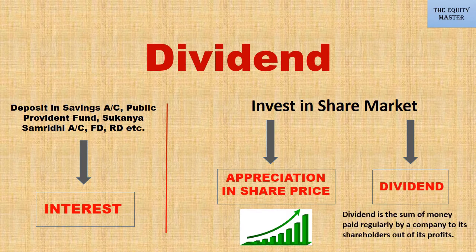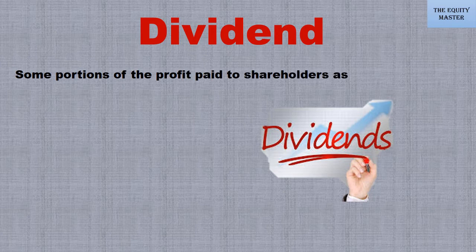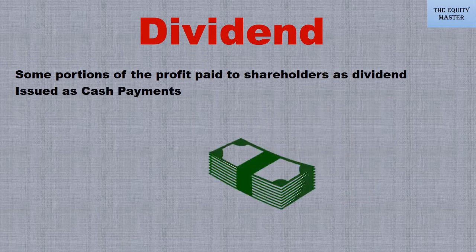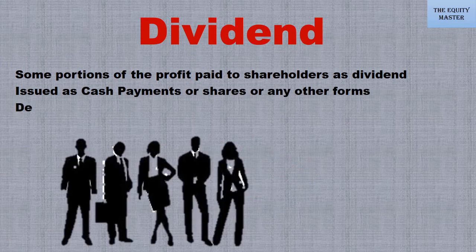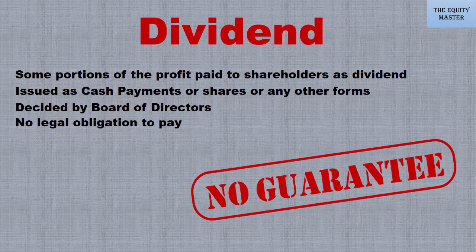Dividend is the sum of money paid regularly by a company to its shareholders out of its profits — so it is some portion of the profit paid to shareholders. Dividend is issued as cash payments, shares, or any other forms. Dividend paid out is decided by the board of directors of the company. The main key point to remember is that dividend is not guaranteed; there is no legal obligation to pay dividend.